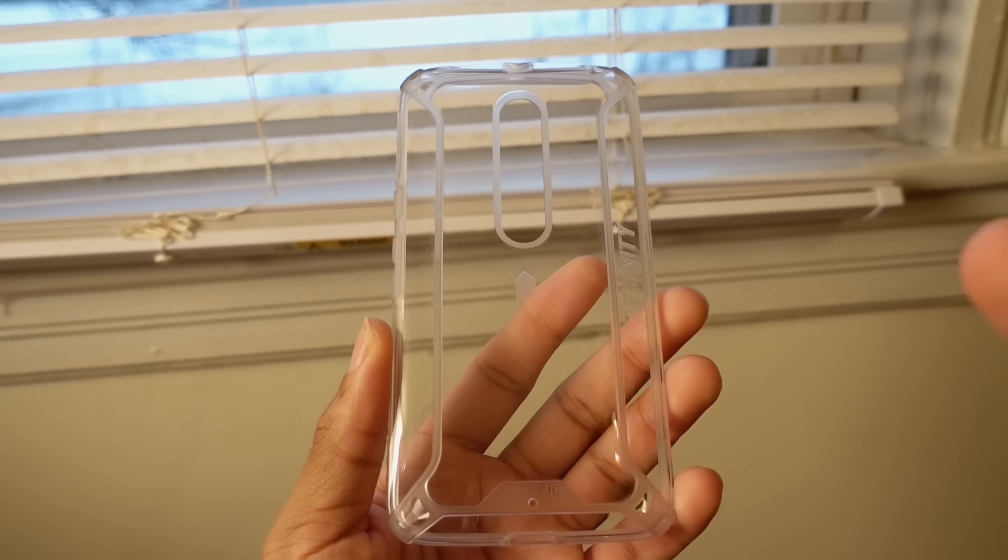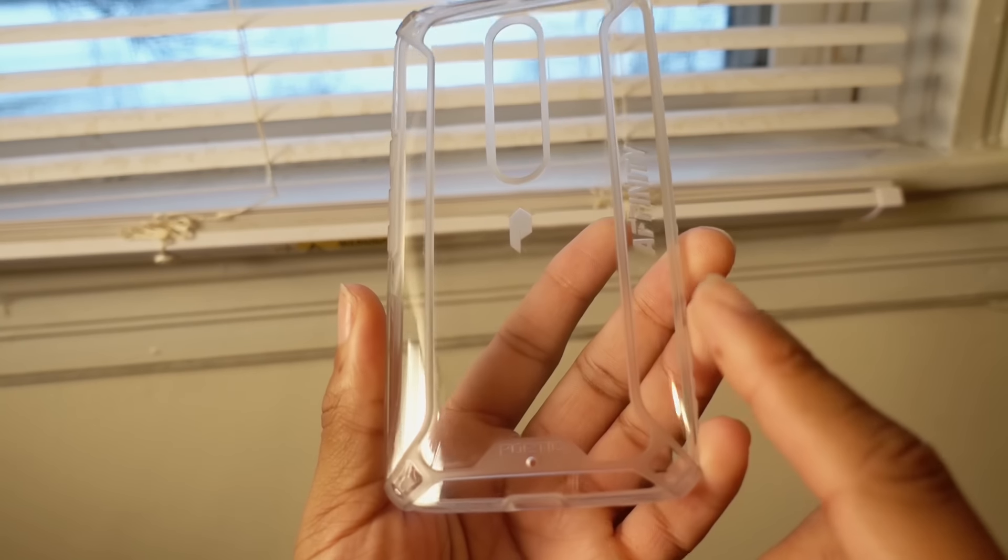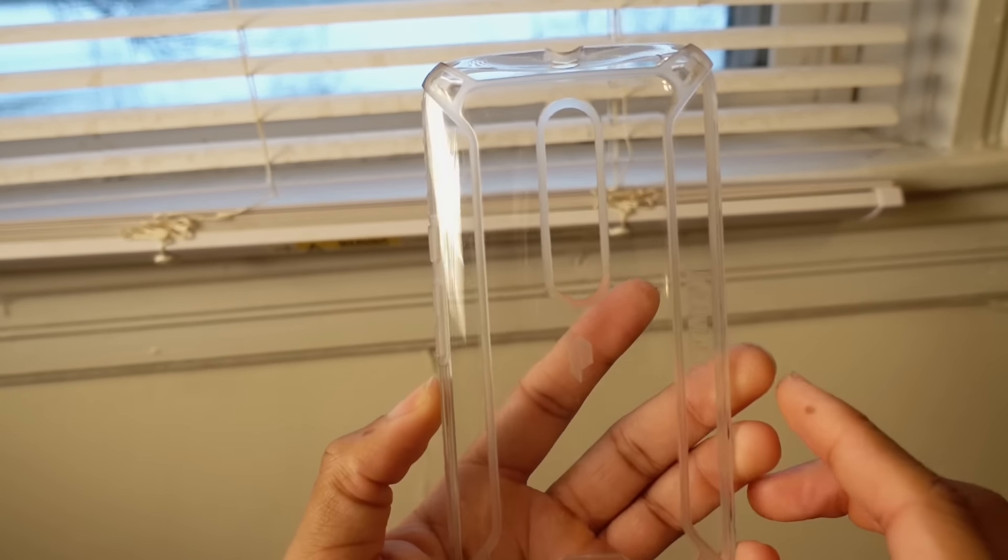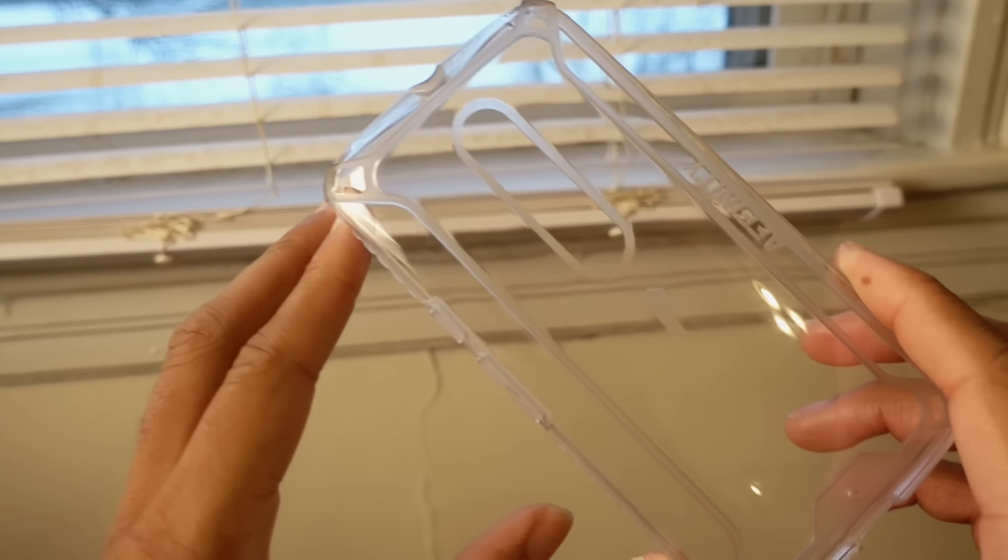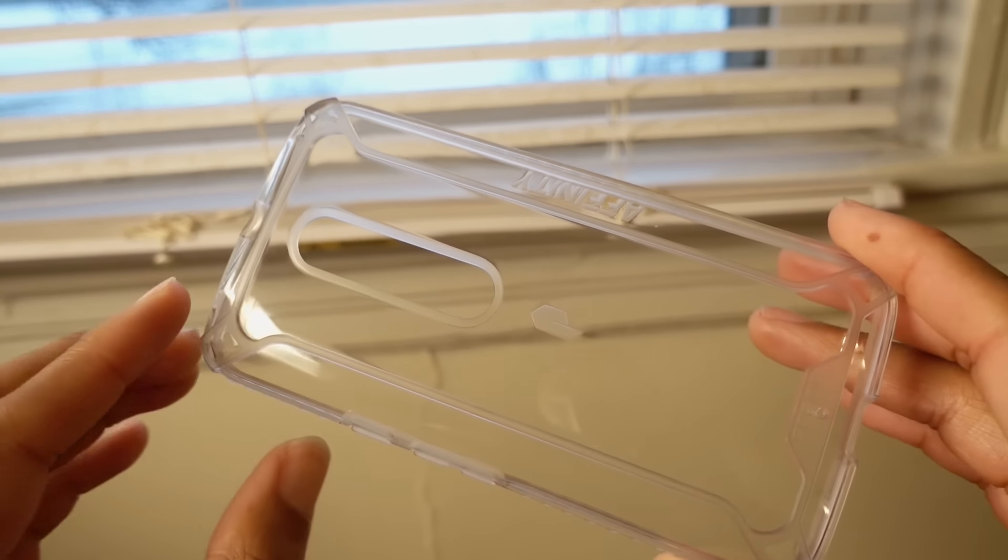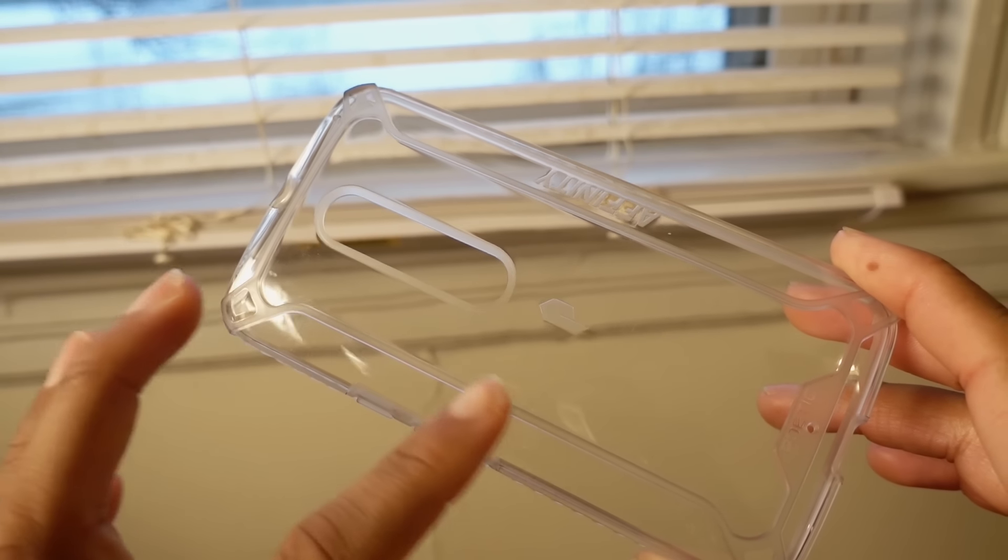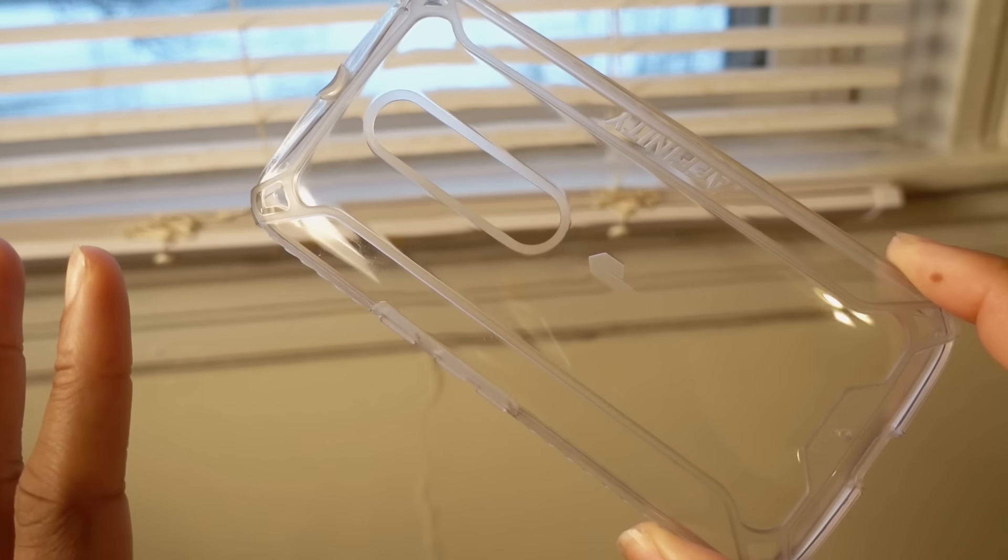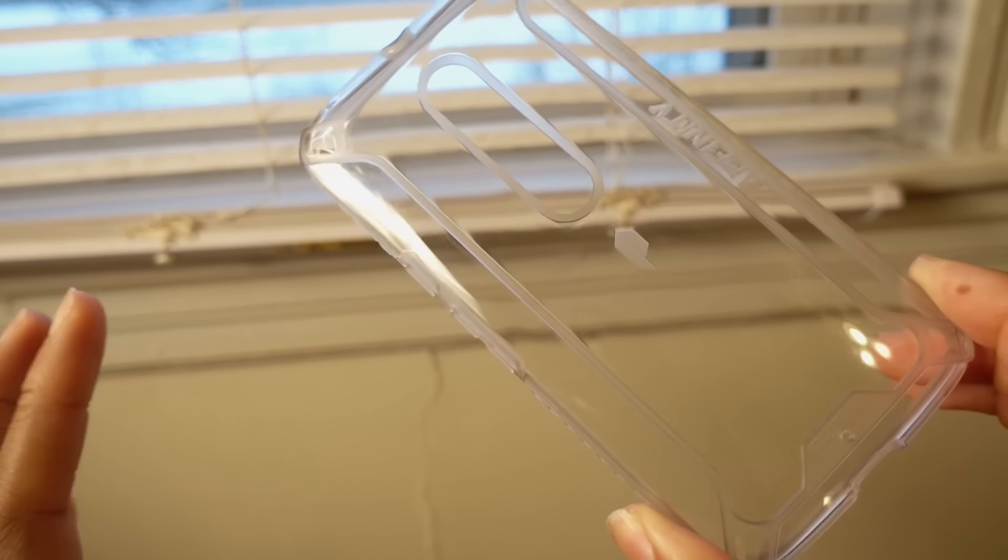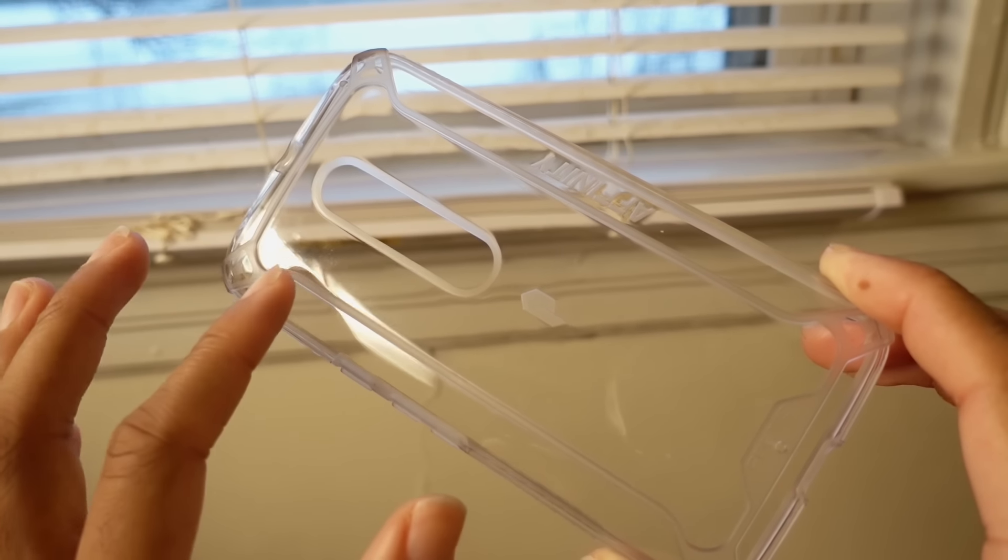Hey guys, how you doing? So we're gonna take a look at the Poetic Affinity case for the Moto X pure edition. This one's the clear case. They do also have a clear and black one, but I prefer the all clear so they can show off the phone the most. You get a clear plastic bag here with some rubber protection, and I'll go over all the protection here.